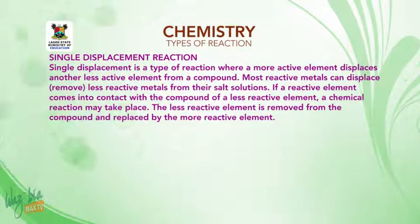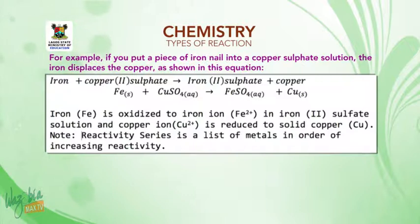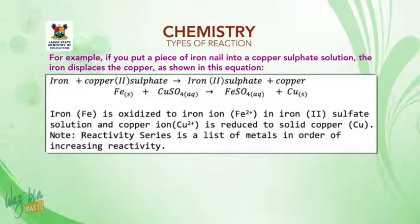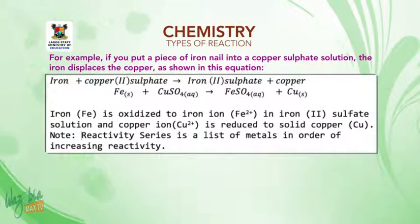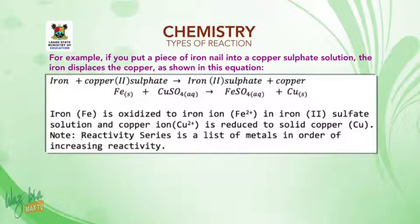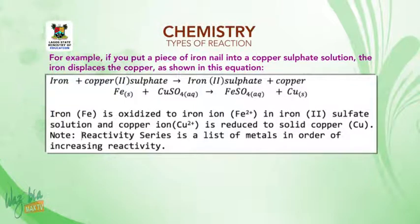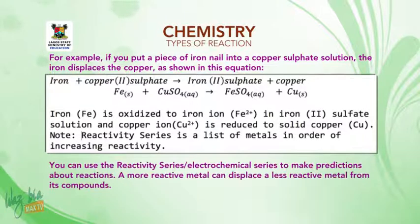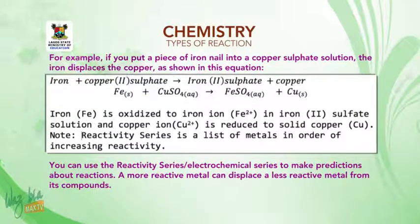The less reactive element is removed from the compound and replaced by the more reactive element. For example, if you put a piece of iron into a copper sulfate solution, the iron displaces the copper: iron + copper(II) sulfate → iron(II) sulfate + copper. Iron is oxidized to iron(II) in solution and copper ion is reduced to solid copper. Note: the reactivity series is a list of metals in order of increasing reactivity, and can be used to predict whether a displacement reaction will occur.